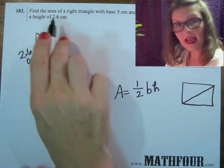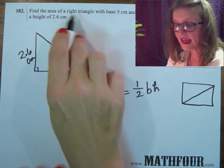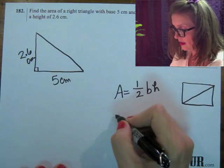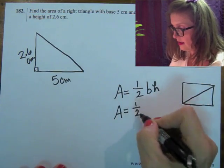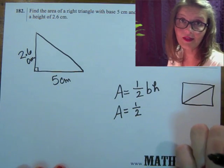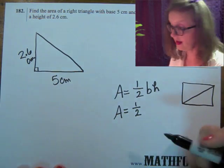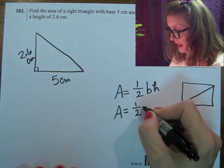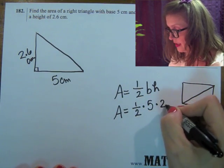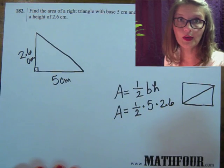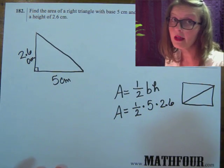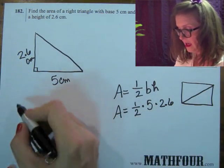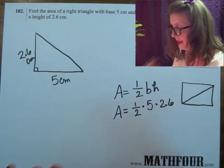Notice it gives you the base and the height. And in this case, the fact that it's a right triangle is completely irrelevant. It doesn't matter what kind of triangle it is — if the base is something and the height is something else, that's what you use in your area formula. The base is 5 and the height is 2.6. And oh, good gracious, we've got fractions mixed with decimals — what a nightmare. So 1 half times 5 times 2.6.